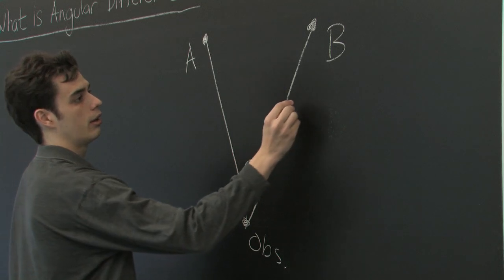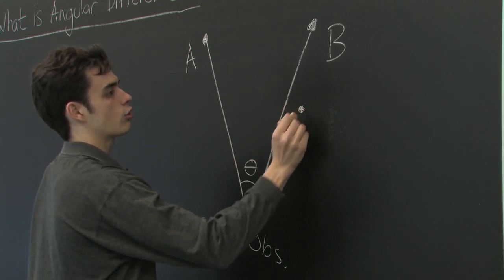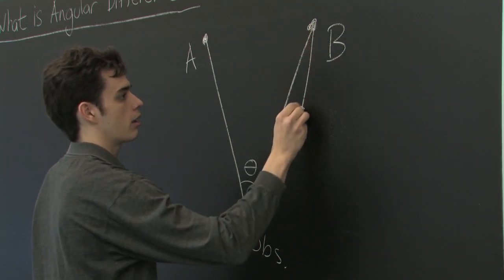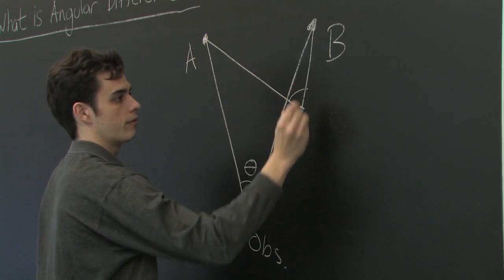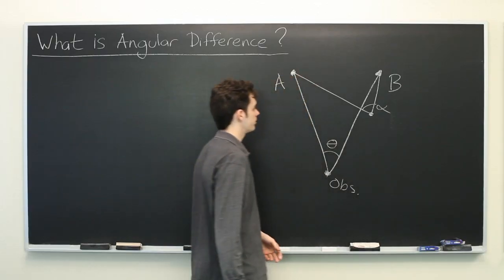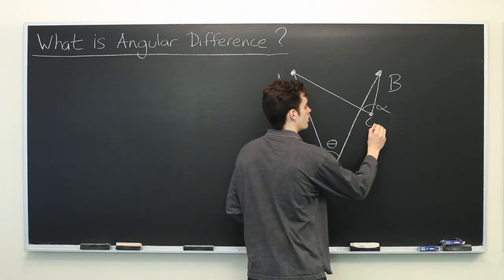So for example, this angle is going to be quite different from this angle. We'll call this Observer 2.